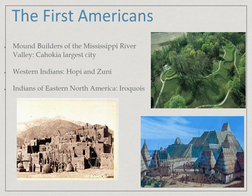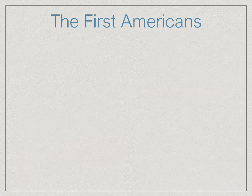Here we've got some pictures of these different groups. The mound builders are shown in the top right and bottom right pictures. Then we've got the Anasazi in the bottom left and the Hopi Pueblos, which are more indicative there.